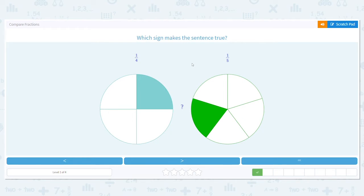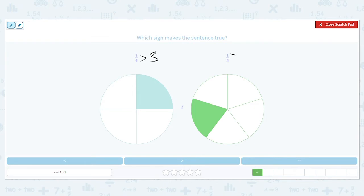My numerator in both of them is one. Now, what is four minus one? It's three. What is five minus one? Four. So which is closer to one? Three or four? Three is closer to one.